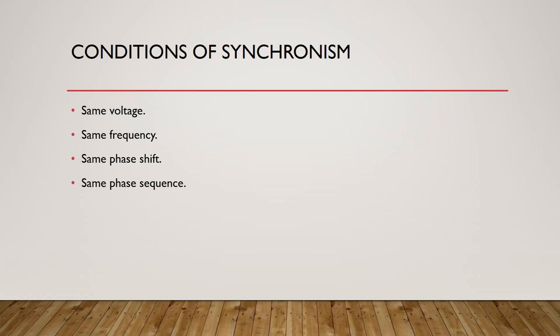The fourth condition is that generators should have the same phase sequence. For example, phase A is sin(ωt) and phase B is sin(ωt − 120°). Phase A of generator one must correspond to phase A of generator two, phase B to phase B, and phase C to phase C. Additionally, every generator output voltage should have the same waveform — a sinusoidal waveform.